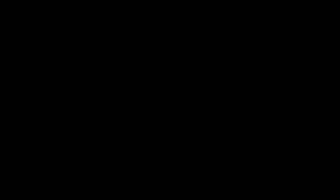Each patient also provided a 24-hour urine sample for the determination of the urinary profile of lithogenic risk. This is a standard panel of 19 laboratory measures providing a complete picture of the physicochemical risk of lithogenic salt precipitation, and this is also the standard tool for the evaluation of the risk of kidney stone recurrences. Participants also provided a stool sample for microbiome analyses.